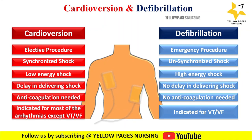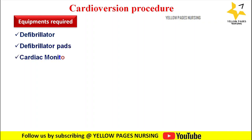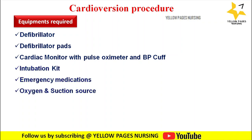Equipment needed for the cardioversion procedure includes a defibrillator, defibrillator patches, cardiac monitor with pulse oximeter and blood pressure cuff, intubation kit, emergency medications, oxygen and suction source, conductive gel, bag-valve mask, and prescribed medication as ordered.